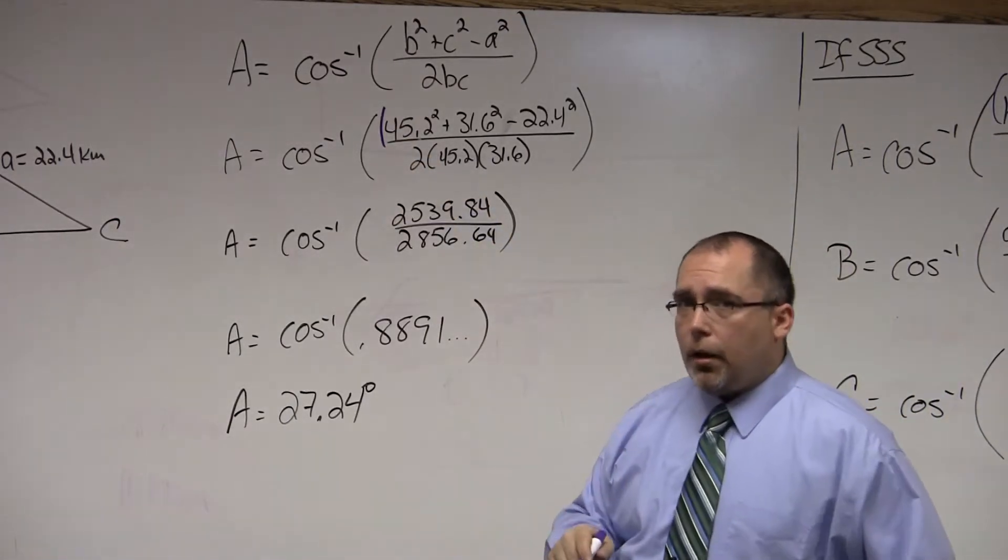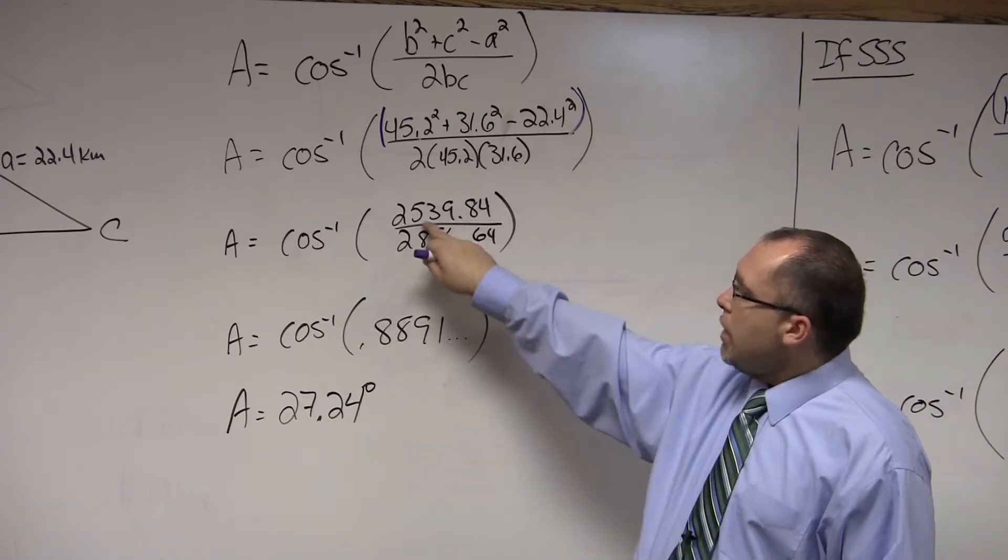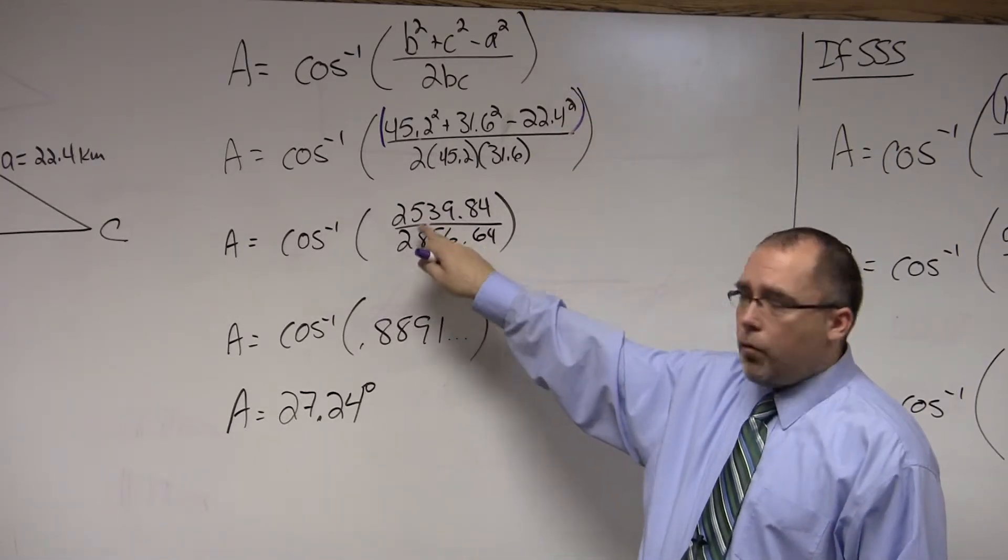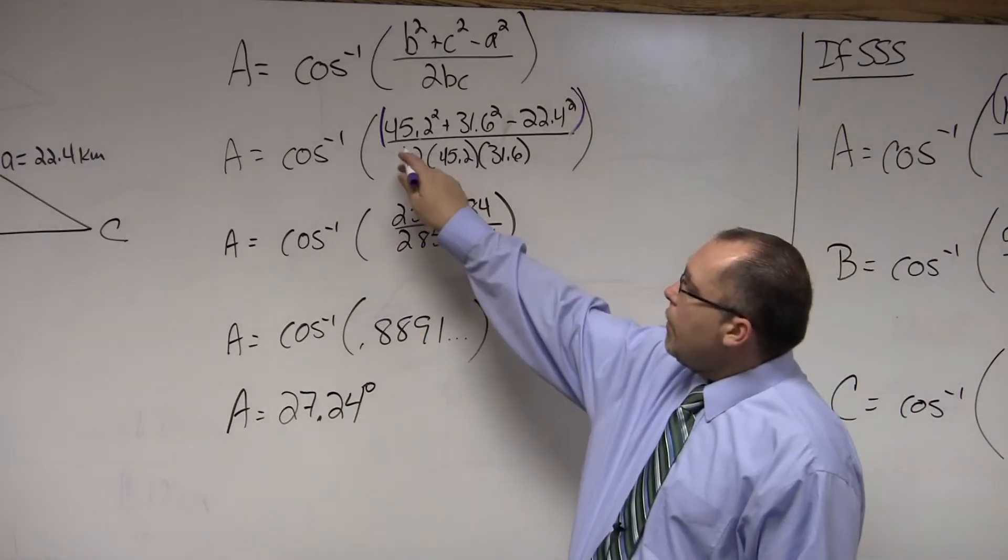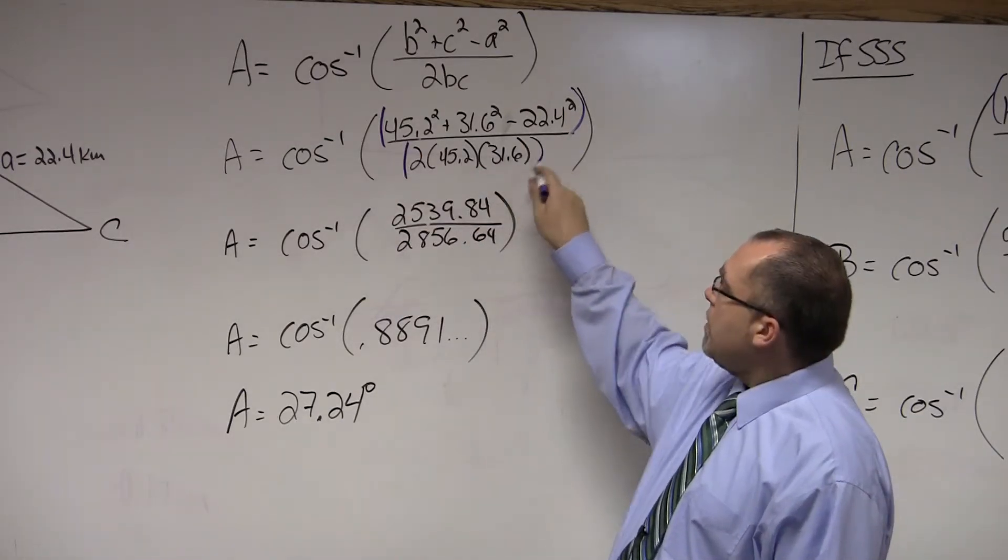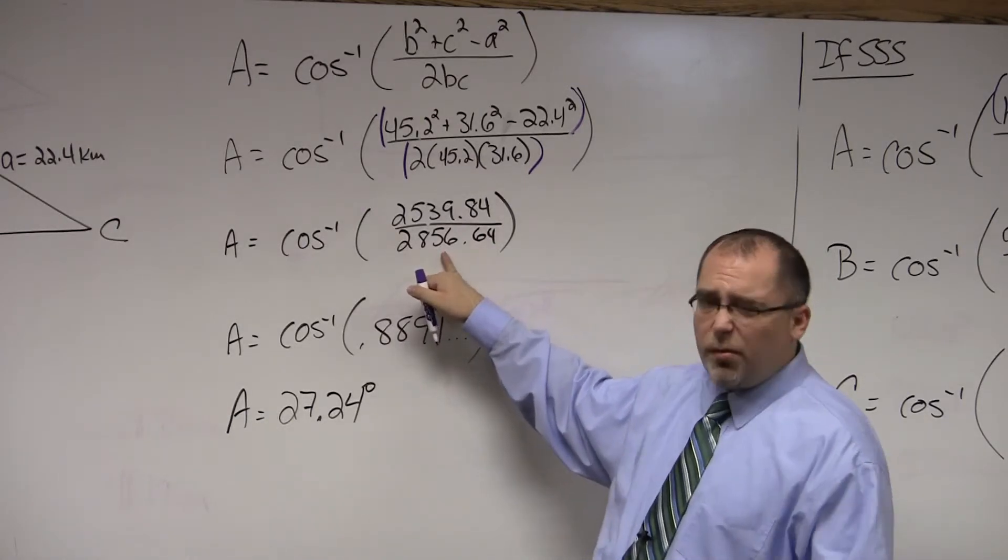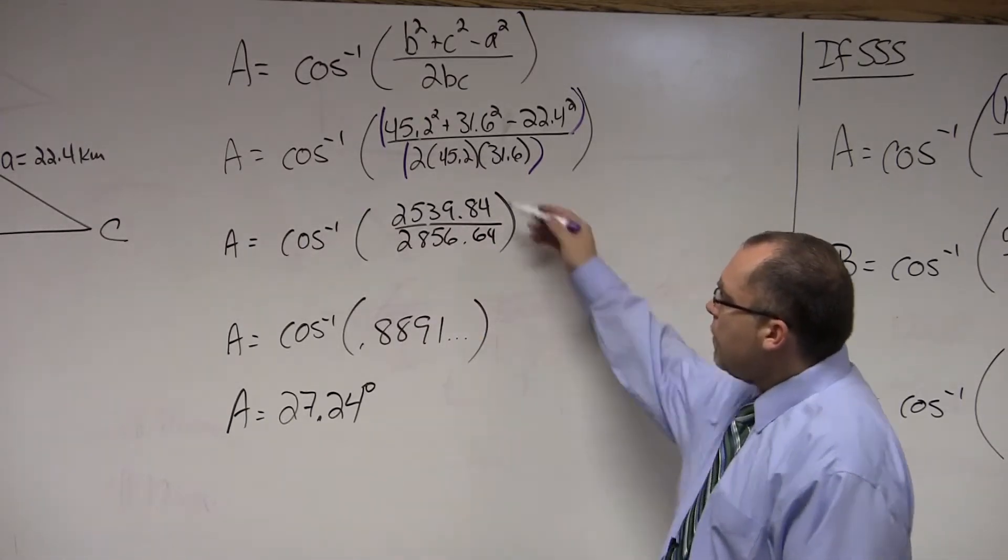And now, I broke this into steps to show you something here. Again, when you're entering it in your calculator, put open parenthesis, that whole numerator, close it, you should end up with 2539.84. For your denominator, open parenthesis, 2 times 45.2 times 31.6, close it, you should end up with 2856.64 and change.